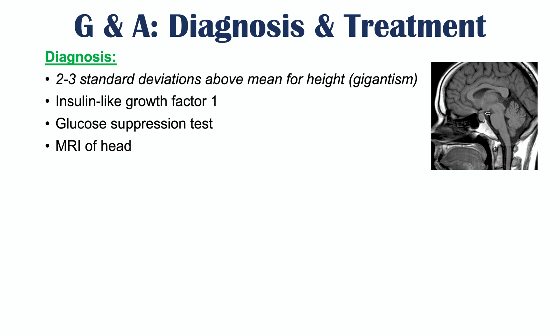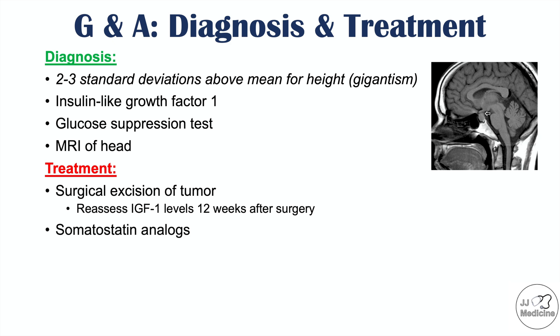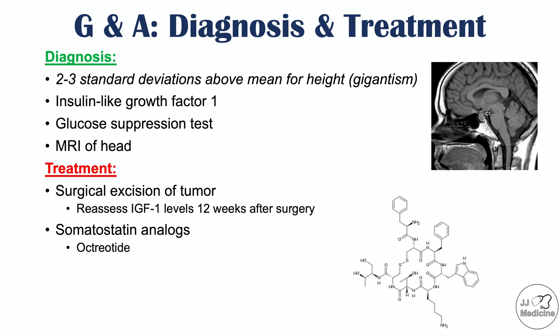An MRI image can reveal a pituitary adenoma. For treatment, surgical excision of the tumor — whether a pancreatic islet cell tumor or another tumor — is a primary option. Following excision, IGF-1 levels should be reassessed 12 weeks after surgery to ensure complete tumor removal. Somatostatin analogs, such as octreotide, can also be used since somatostatin inhibits growth hormone release. Dopamine agonists such as cabergoline, and in some cases radiation, can also be utilized.